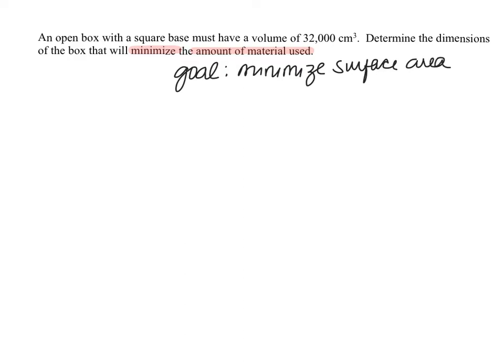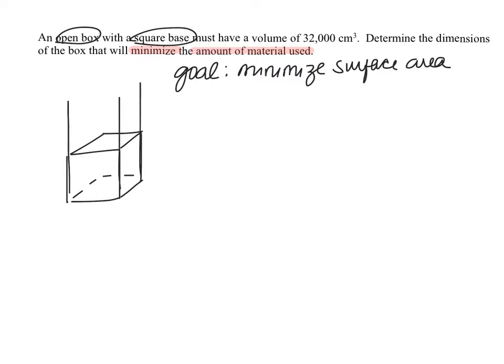I always like to start by drawing a diagram if possible. So we have an open box with a square base. Be careful here — it's a common mistake to assume the box has to be a cube just because it has a square base. But this doesn't say it has to be a cube; it just says the base at the bottom is square. So I'm going to redraw my diagram so that it's clearly not a cube.